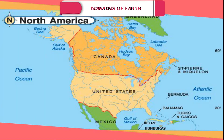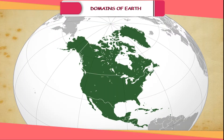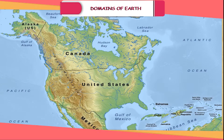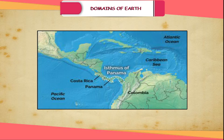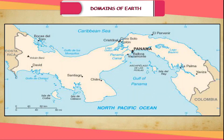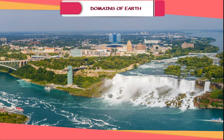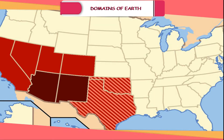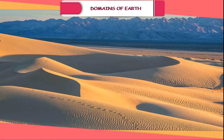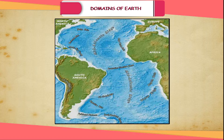North America is the third largest continent of the world. It lies entirely in the northern and the western hemisphere. It is surrounded on all sides by oceans and seas except to the south, where it meets South America. It is joined to South America by the Isthmus of Panama, which is a narrow strip of land joining two large land masses. The famous Niagara Falls, between Canada and the United States, lie in this continent. In the southwest of the United States, a large part of the continent is desert, but through human efforts much of this desert has been turned into lush green fields. The continent is bordered by three oceans — the Pacific, the Atlantic and the Arctic.